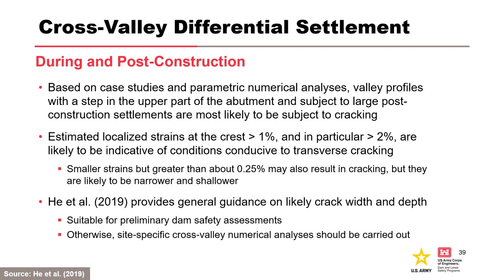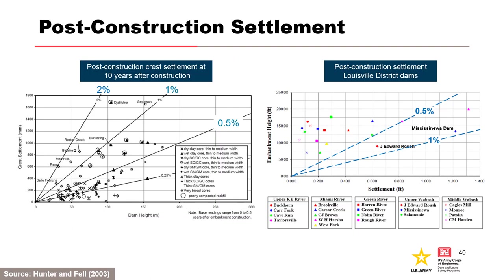Estimated localized strains greater than 1%, and in particular greater than 2%, are likely indicative of conditions conducive to transverse cracking. He et al. 2019 provides general guidance on likely maximum crack depths and widths based on numerical modeling suitable for preliminary assessments. Case studies show most dams settle less than 0.5% in the 10 years after construction, and many dams with cracking experienced 1% to 2% post-construction settlement as a percentage of maximum embankment height — though cracking was also observed at smaller settlements where other unfavorable conditions existed.